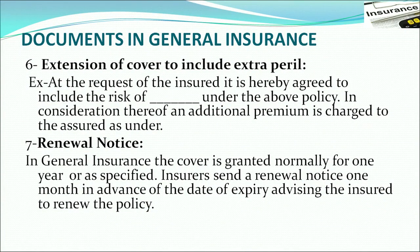Extension of cover to include extra peril means an additional risk borne by the insurance company, for which an extra premium is charged. For example, if a policyholder suffers from blood pressure or diabetes and wants to take an insurance plan, the insurer covers this extra risk. The endorsement would state that the risk is included under the policy and that an additional premium is charged accordingly.